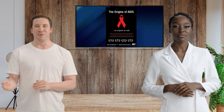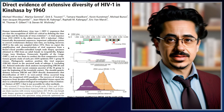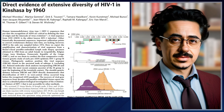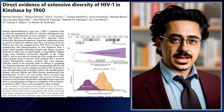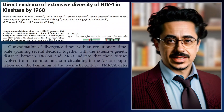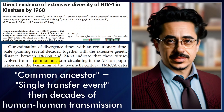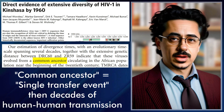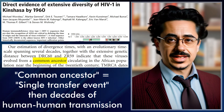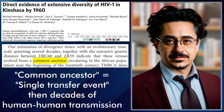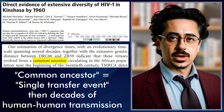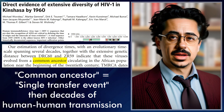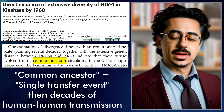Why did Worobey say AIDS couldn't have come from the vaccine? In very simplified terms, Worobey's 2008 research examines the genetic diversity of the AIDS virus in early samples from Kinshasa, Congo, dating back to 1960. His paper operates on the assumption that there was a single transfer event of the AIDS virus from chimpanzees to humans, and it evolved into multiple variants over decades through human-to-human transmission. Based on this paper, scientists generally accept that the AIDS virus was already spreading in Kinshasa, Congo for decades before the 1950s vaccination campaign.